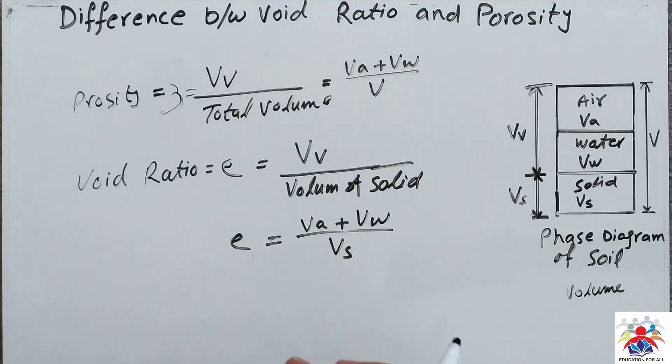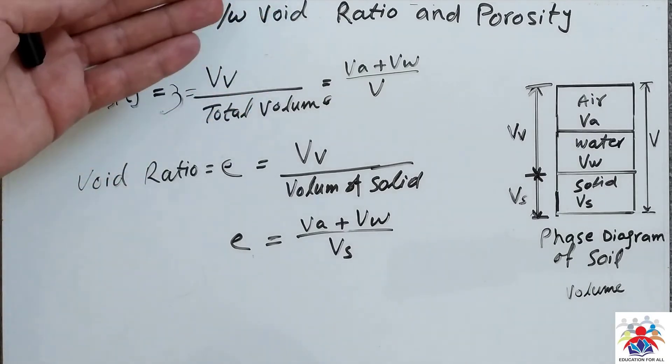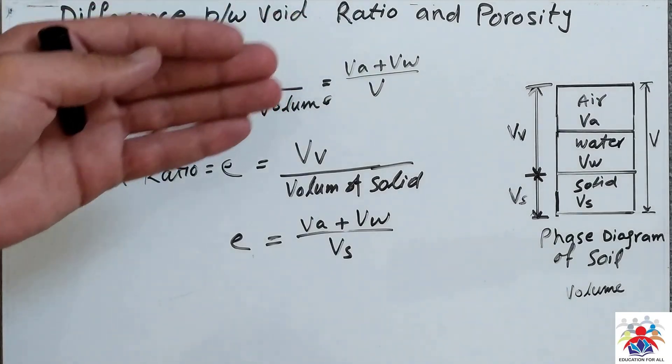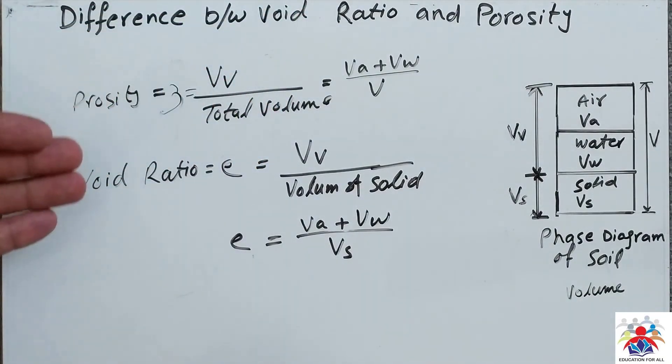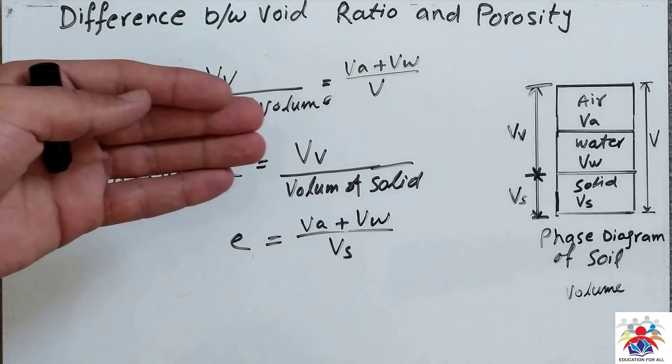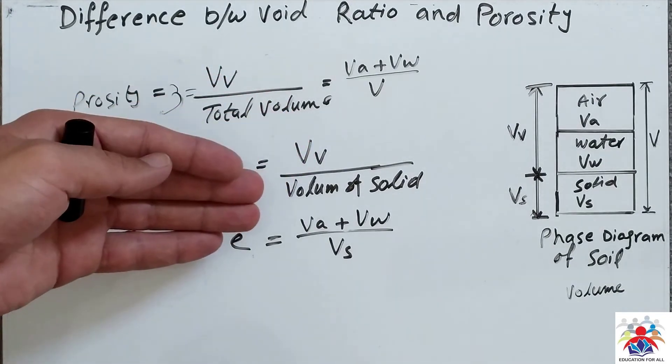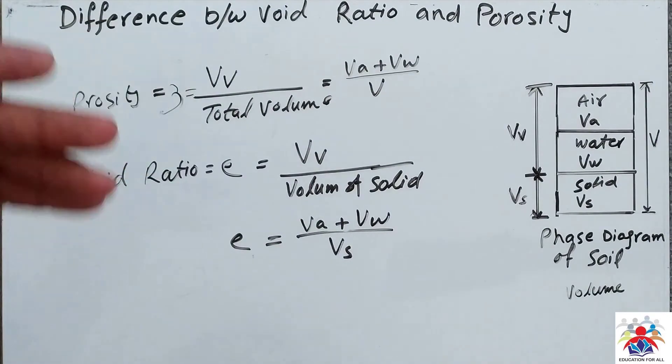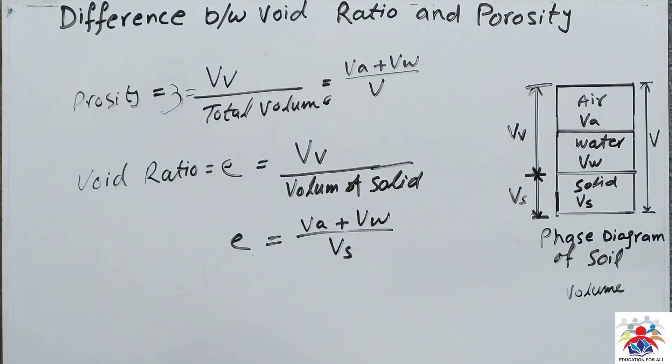Divided by volume of solid, which will be only VS. So that's the main difference between them. Porosity is volume of voids divided by total volume, and the void ratio is volume of voids divided by volume of solid only, as you can see in the formula. That's it for today. Thank you for watching my video. Please don't forget to subscribe to my channel.